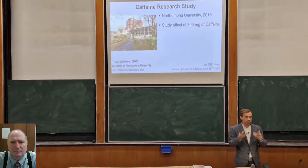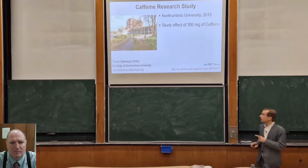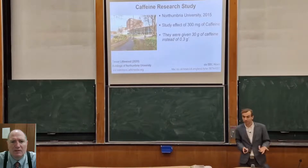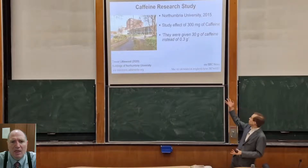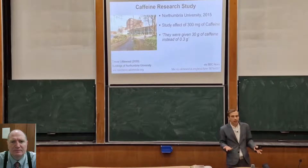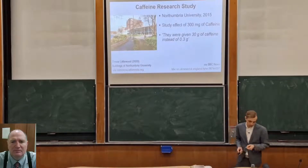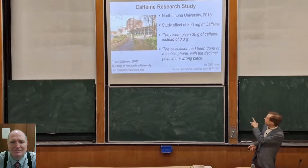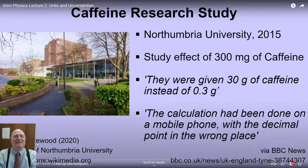So the idea was these two students were going to take this caffeine and see what happens, see how their physiology was affected. What actually happened instead? They were given 30 grams of caffeine instead of 0.3. So SI prefixes are not such a small deal — what's that little 'm'? But clearly you don't have to be a chemist to see that's a considerable amount of caffeine. There's another really interesting quote from this story: the calculation had been done on a mobile phone with the decimal point in the wrong place. That's funny — really funny.